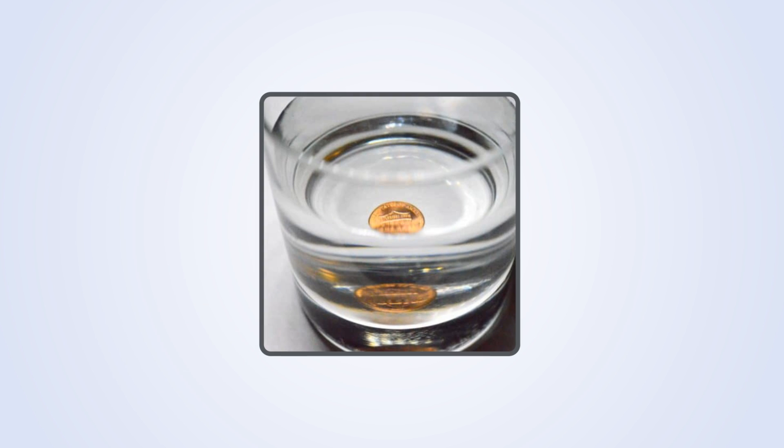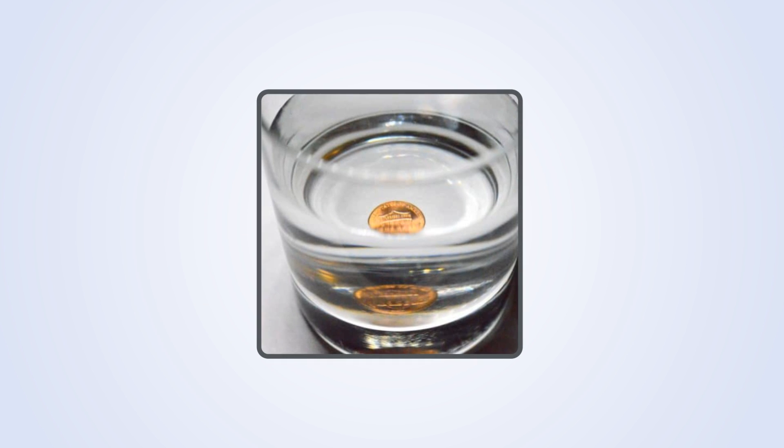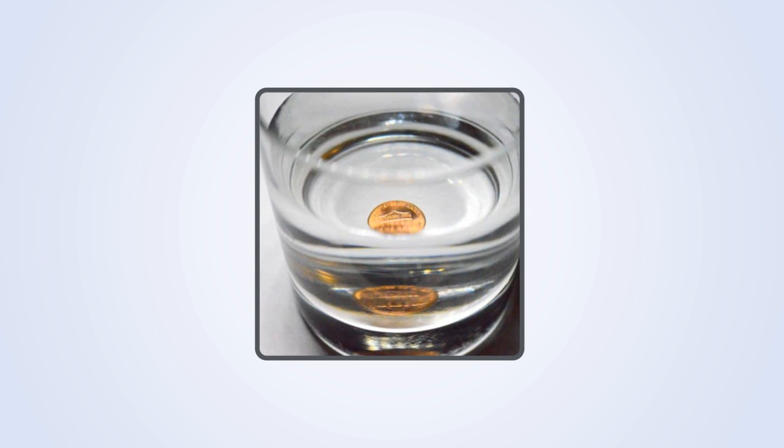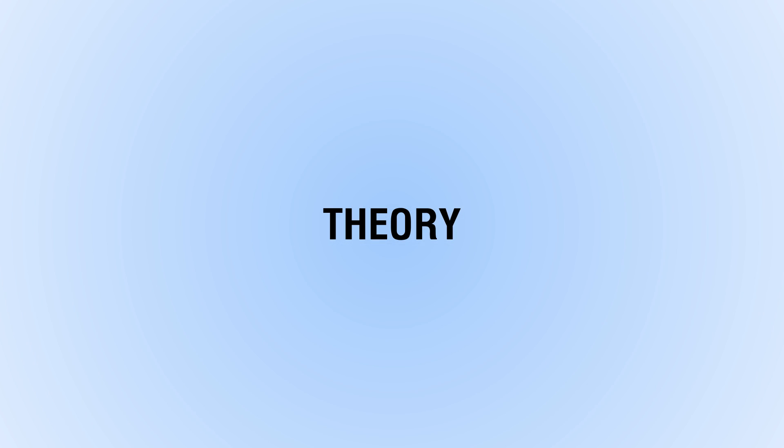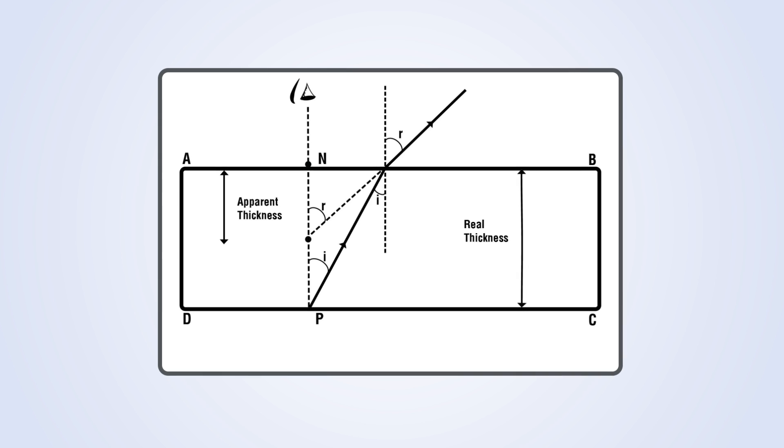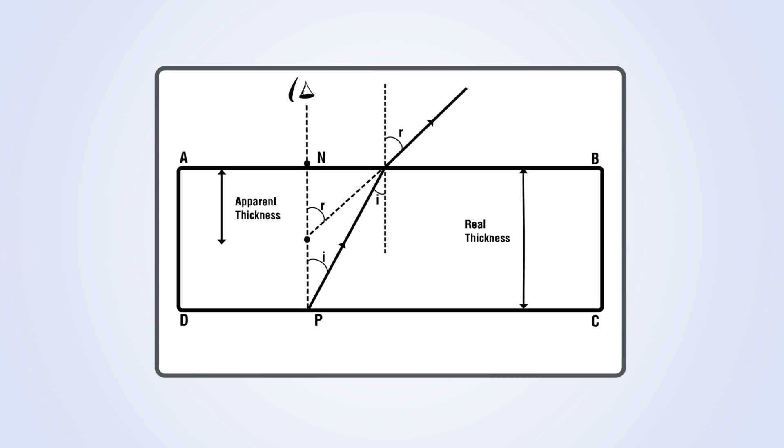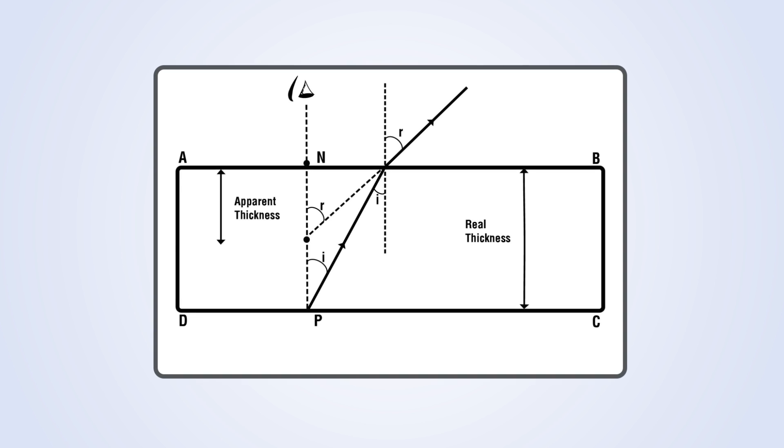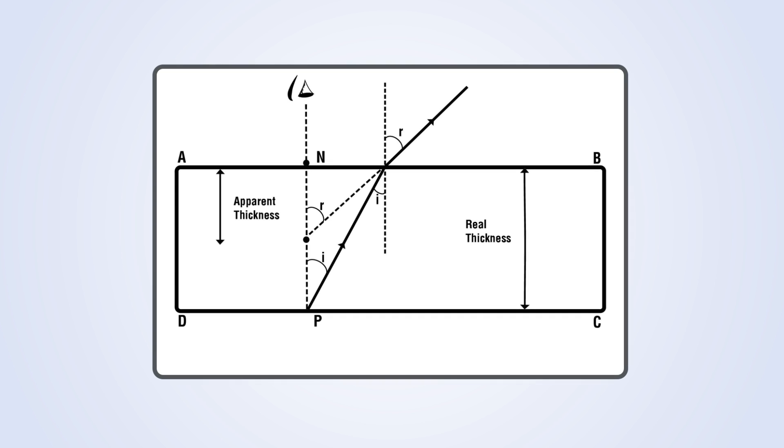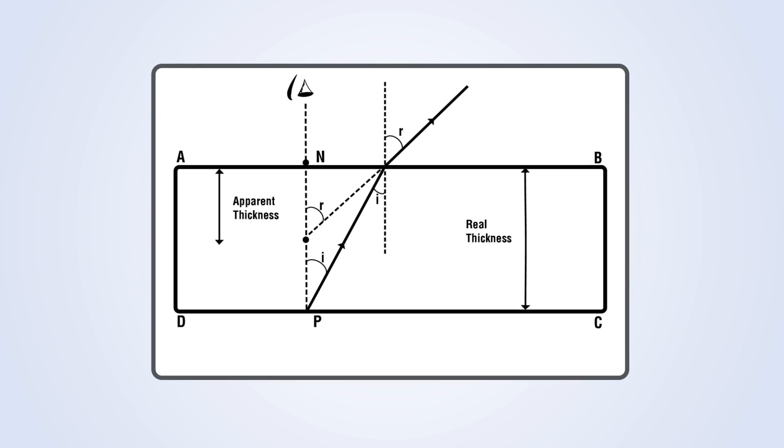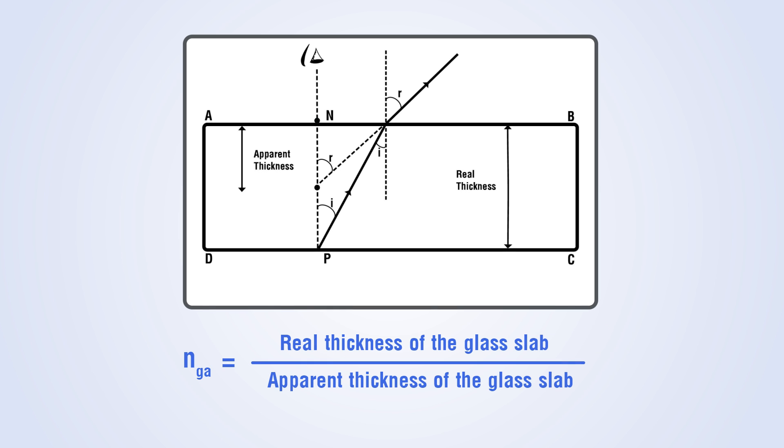Here we use the concept of real and apparent depth to determine the refractive index. Theory: If a glass slab is placed in air on a horizontal surface and its bottom surface is viewed from top, it appears to be elevated due to the phenomenon of refraction. In case of normal observation, it can be shown that the refractive index of glass with respect to air is the ratio of real thickness of glass slab to the apparent thickness of the glass slab.